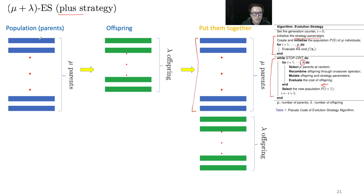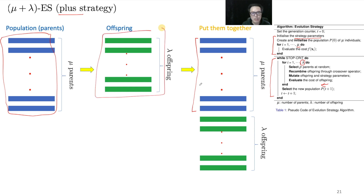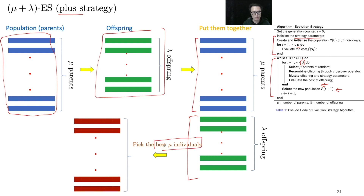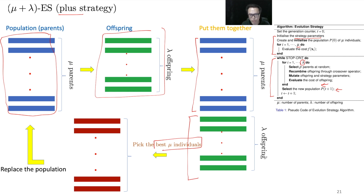Once we complete one cycle, we have the blue bars representing the parents and the green bars representing the λ offspring. In the next step, from the combined μ+λ individuals we select the μ best and put them back into the population. Because we implement elitism, we pick the best from both parents and offspring.